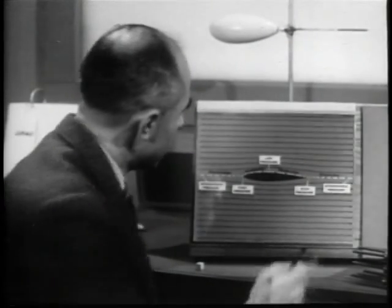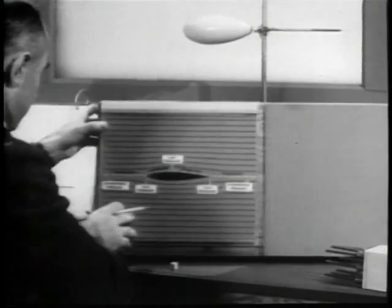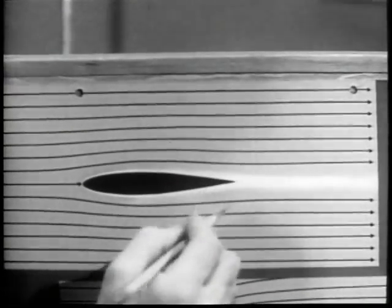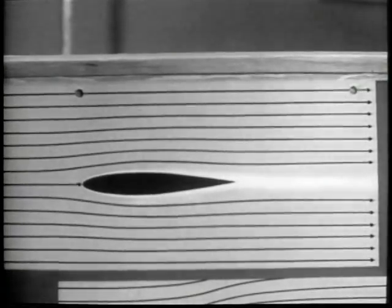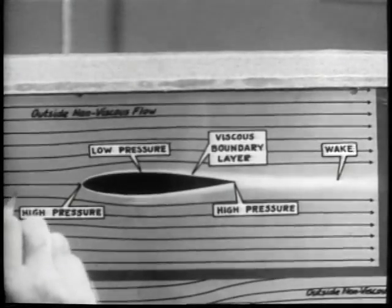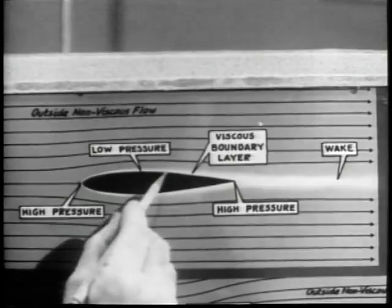Now we must worry about how all this has changed when viscosity is present. The velocity at the airfoil surface is then zero. But at very high Reynolds numbers, we have only a very thin boundary layer in which viscosity is important. The remainder of the flow behaves as before in a non-viscous way. The pressure distribution previously established by the main large body of non-viscous flow is as it were impressed on the very thin boundary layer of fluid.